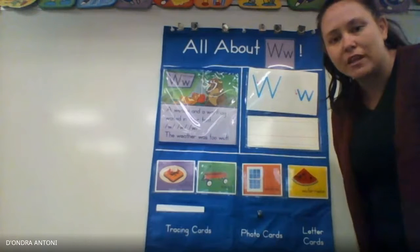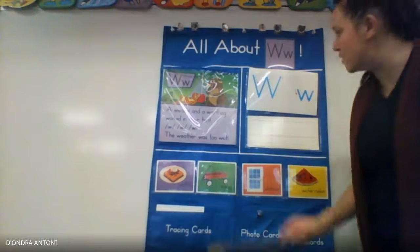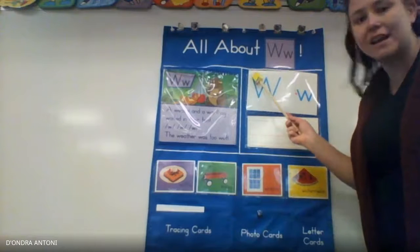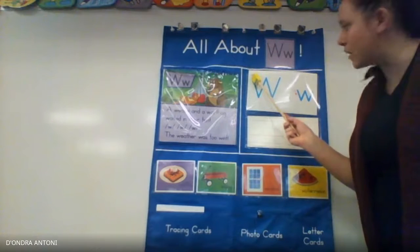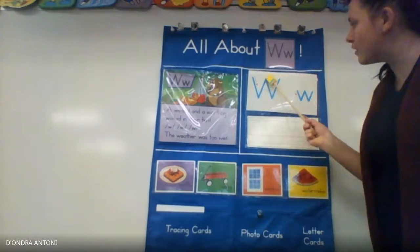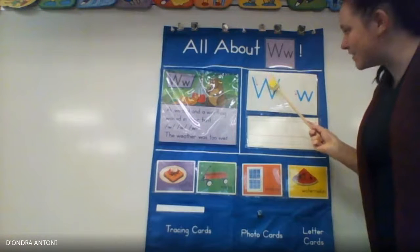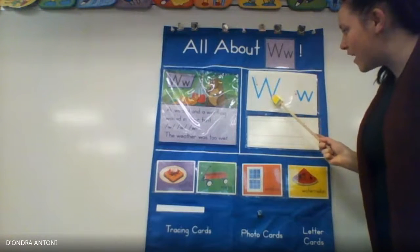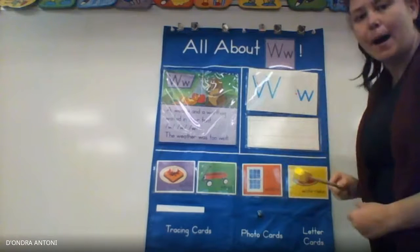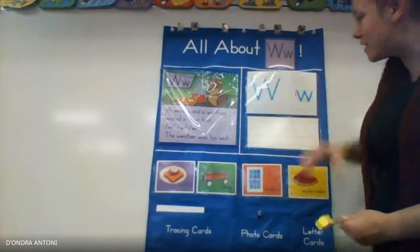Now let's work on writing the W. We're gonna start at the top and do a diagonal line down, diagonal line back up, diagonal line down, and diagonal line back up. Good job.